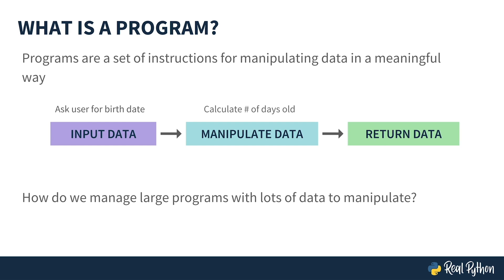Then it manipulates the data by subtracting the current date from the user's birthdate. Finally, the program displays the result of this calculation on the screen. That's a great starter program, but it's pretty trivial. How do we manage large programs with lots of data to keep track of, like a video game?